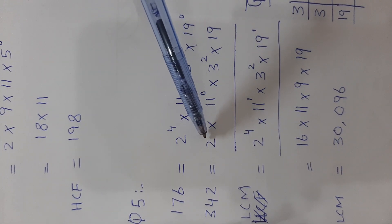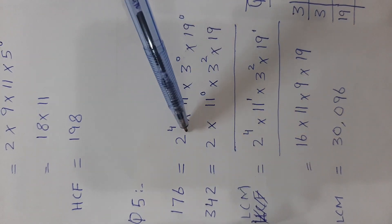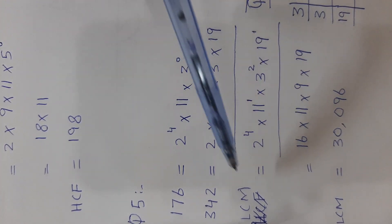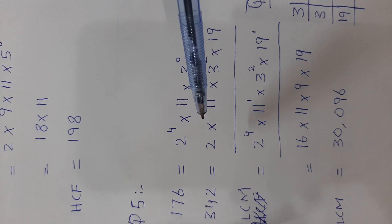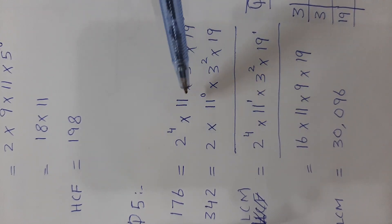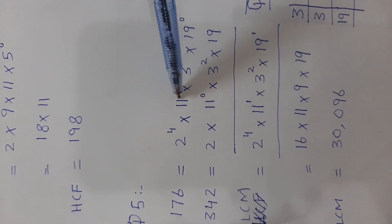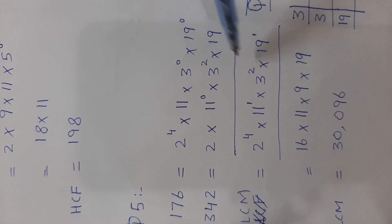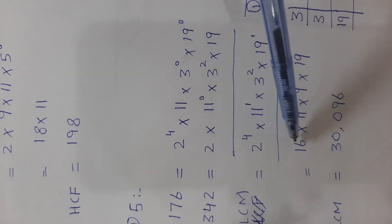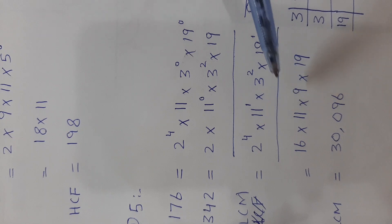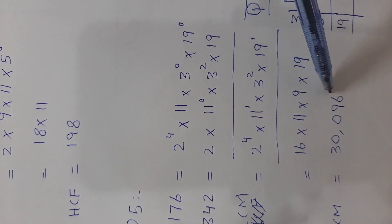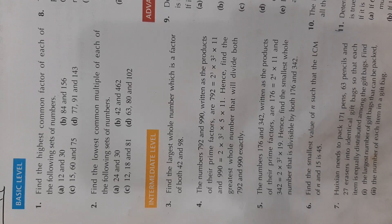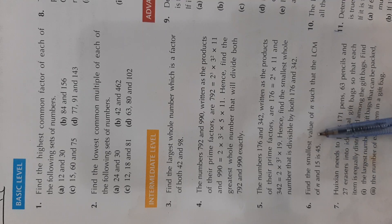For LCM, take out the number having the maximum power from each column. Take 2⁴ from the column of 2, 11¹ since 11¹ > 11⁰, 3² from the column of 3, and 19¹ from the column of 19. LCM = 2⁴ × 11 × 3² × 19 = 16 × 11 × 9 × 19 = 30096.